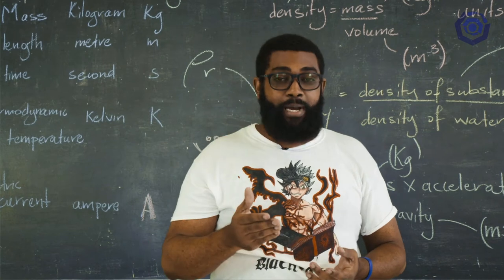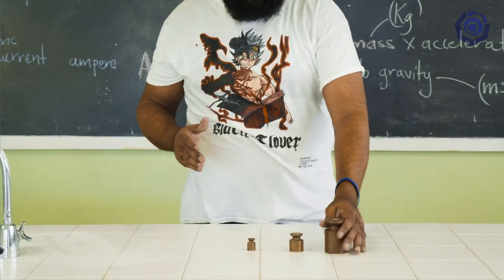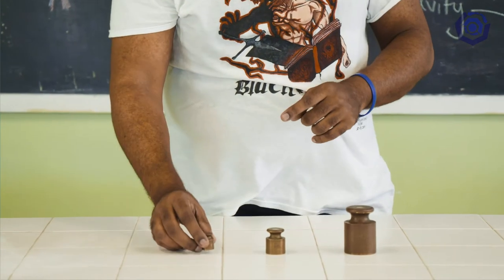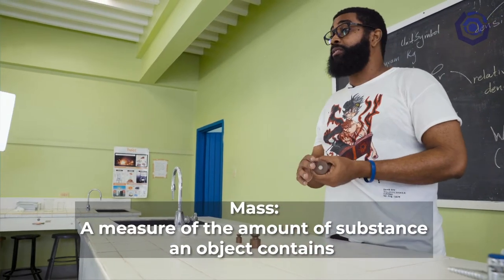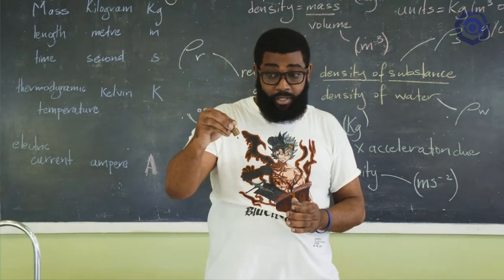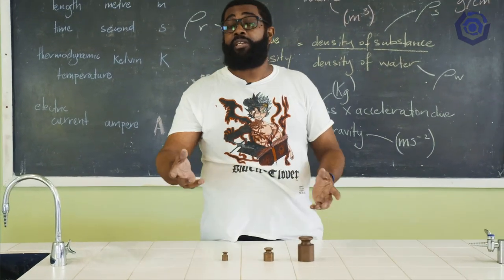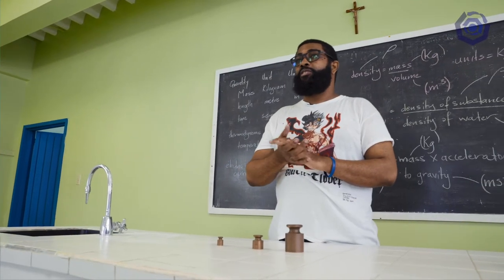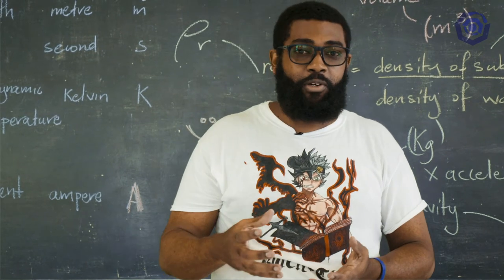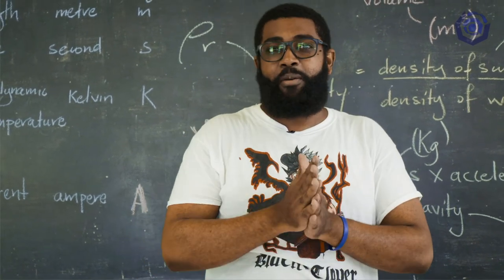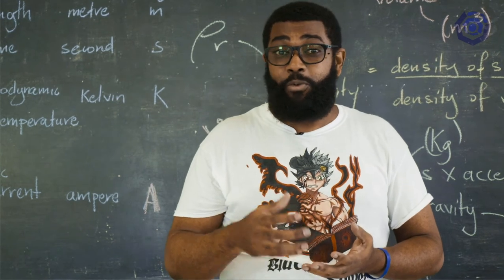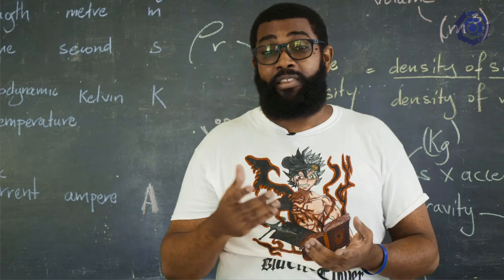Now we will look at mass. Here we have three different masses: big, medium, and small. Mass is simply a measure of the amount of substance an object contains. We Guyanese have a tendency to stick to pounds, but for correctness, mass must be measured in kilograms in a scientific setting. My mass is around 105 kilograms — that means I contain 105 kilograms of substance. So mass is a measure of the amount of substance an object or body contains.